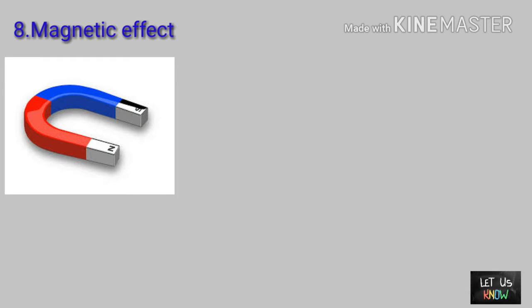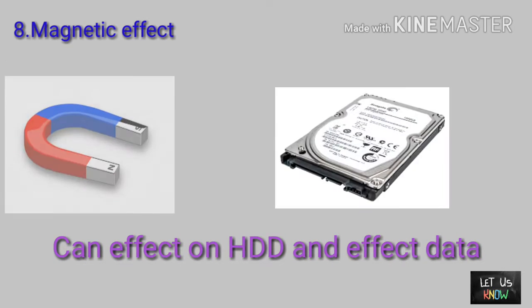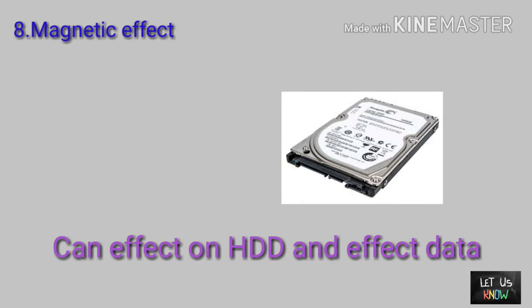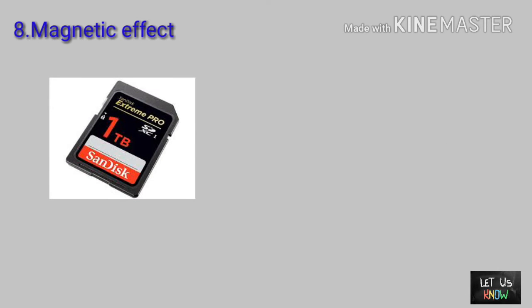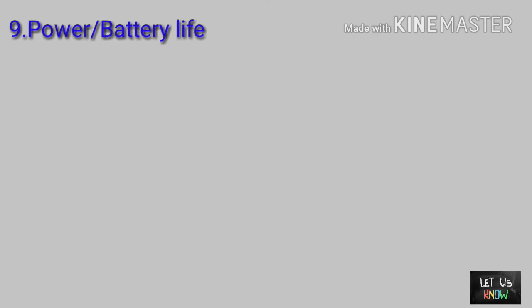The eighth: magnetic effect. Magnets affect a hard disk drive because the plates are made from magnets, which can affect your data. While the solid state drive has no magnets in it, so it will not be affected.